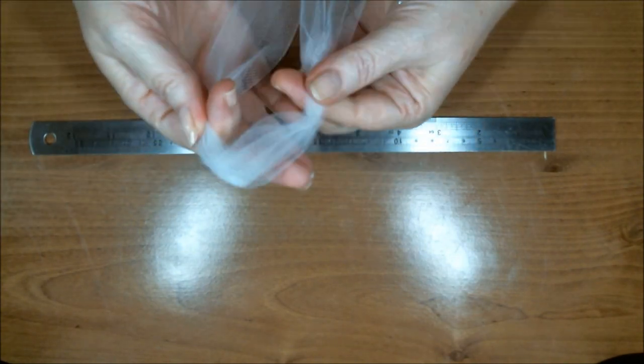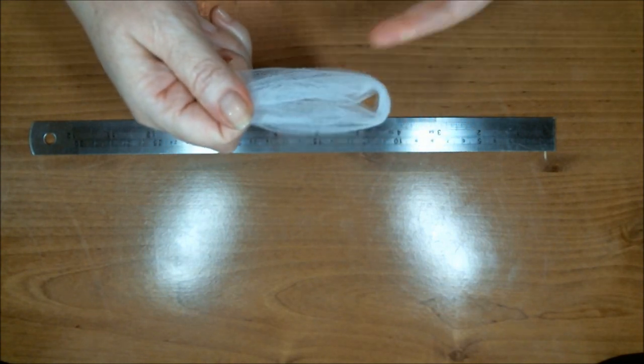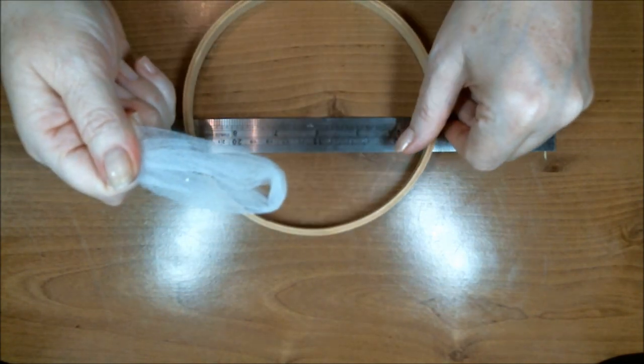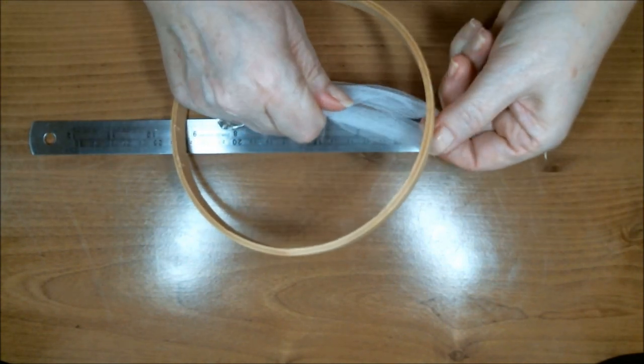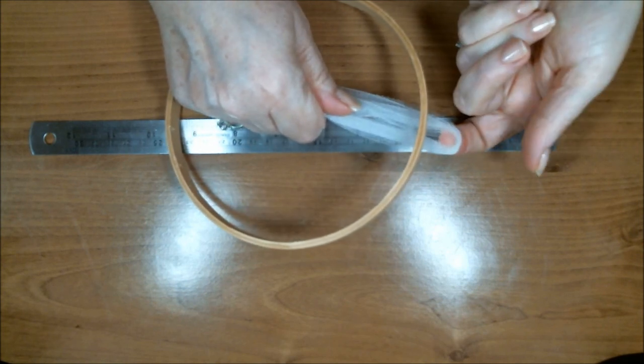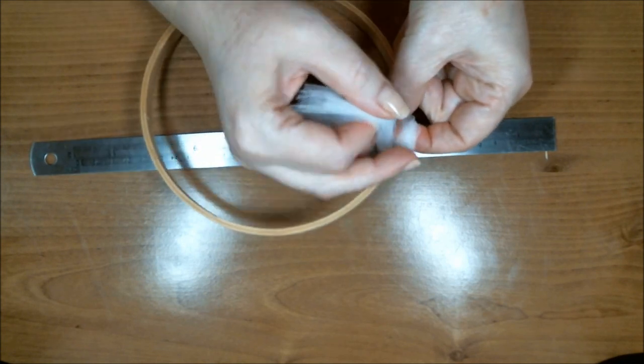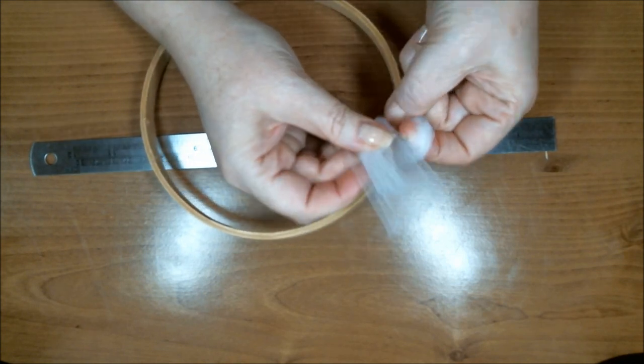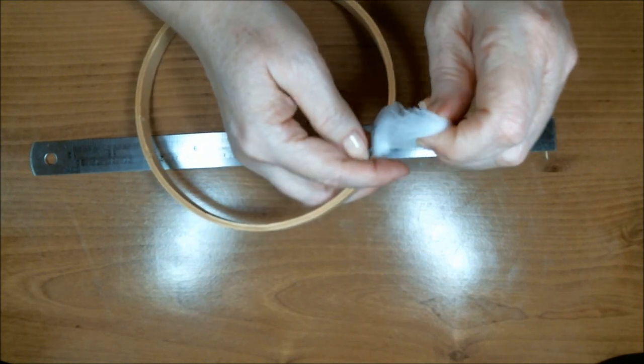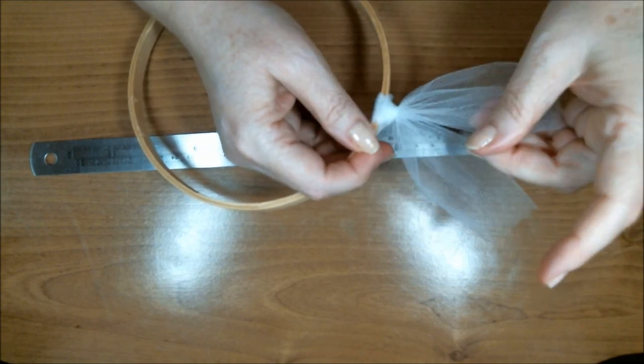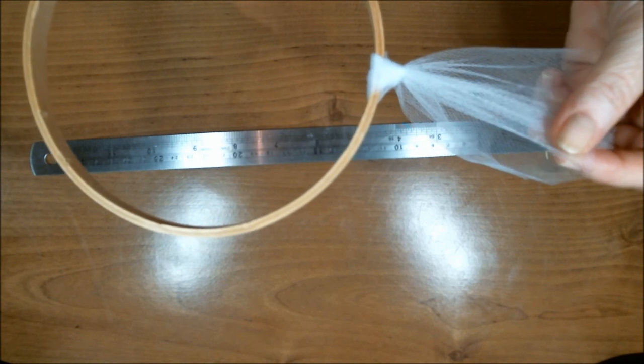Now, you're going to take your tulle and you're just going to fold it in half so you have a loop at the very top. You're going to bring in your embroidery hoop. You're going to take that loop and you're going to put it underneath and towards the outside of your wreath or your hoop. So you're going to have it like this. You're going to bring these two pieces up. You want to try and keep them as even if possible. If it doesn't, it will work out. And then you're going to pull it through and pull it tight. So it forms somewhat of like a slip knot.